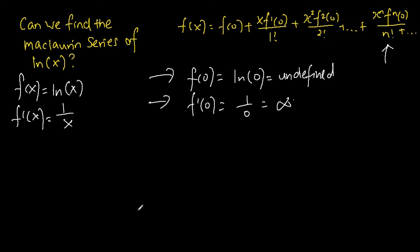because the function ln(x) cannot be evaluated at x equals zero, hence there won't be a Maclaurin series for ln(x).